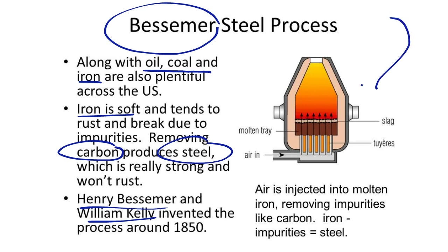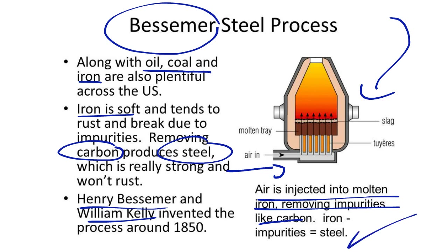The Bessemer process can be seen here in this picture. Air is blown into the reactor and goes up into the molten tray. The slag and impurities drop to the bottom, purifying the iron. Air is injected into the molten iron, which removes impurities like carbon. So iron minus impurities equals a very, very strong steel.